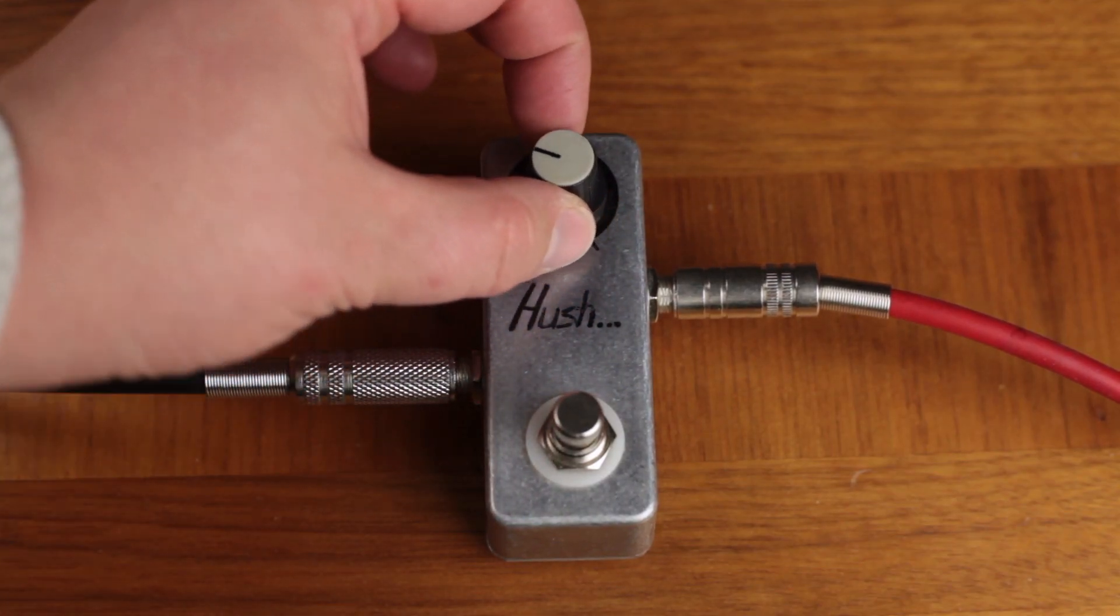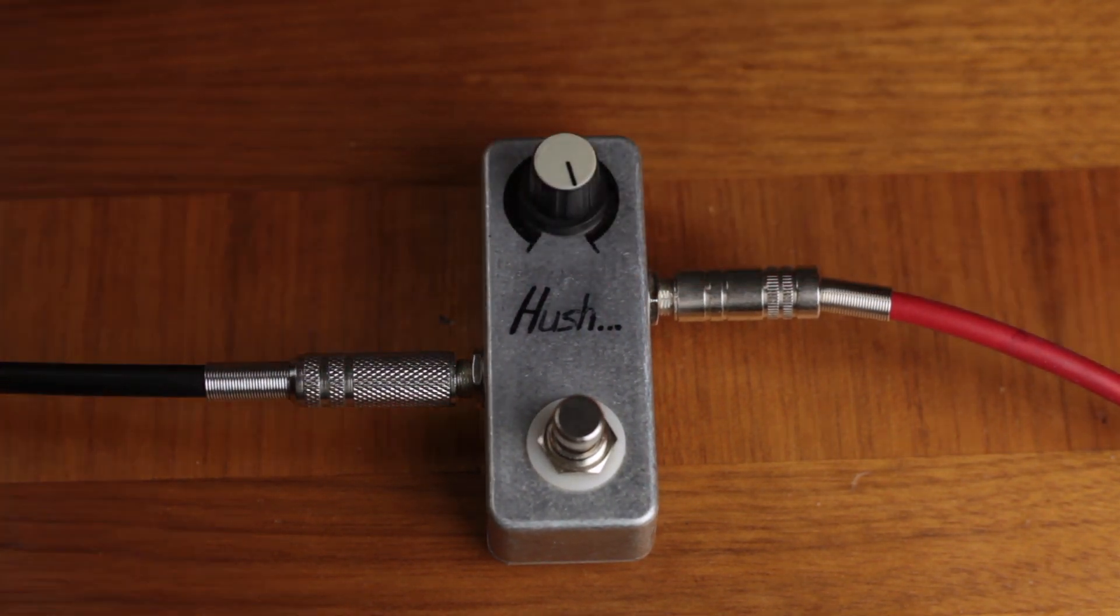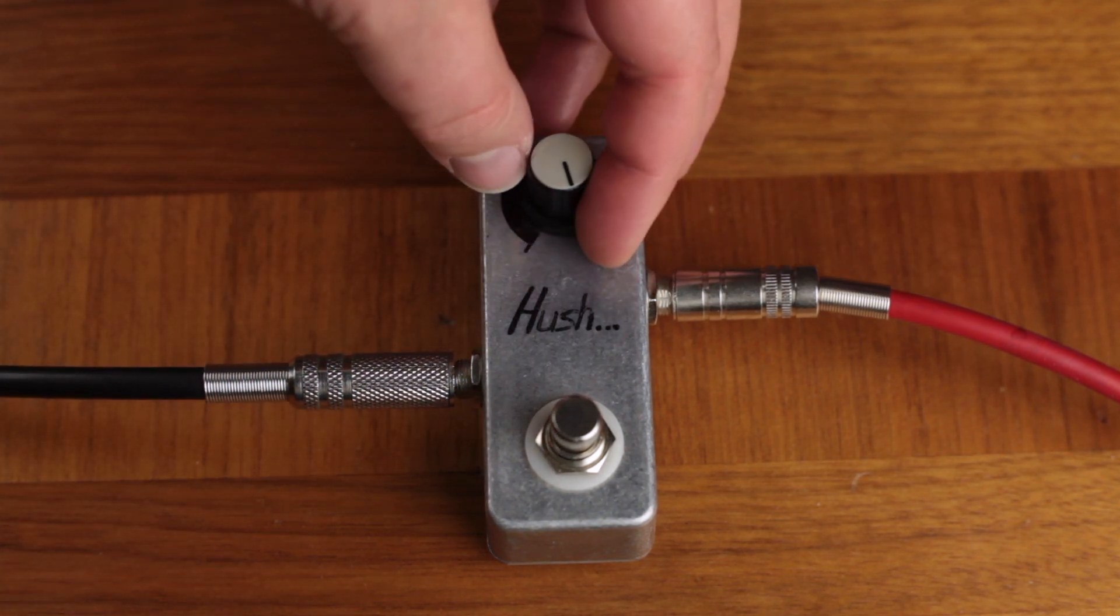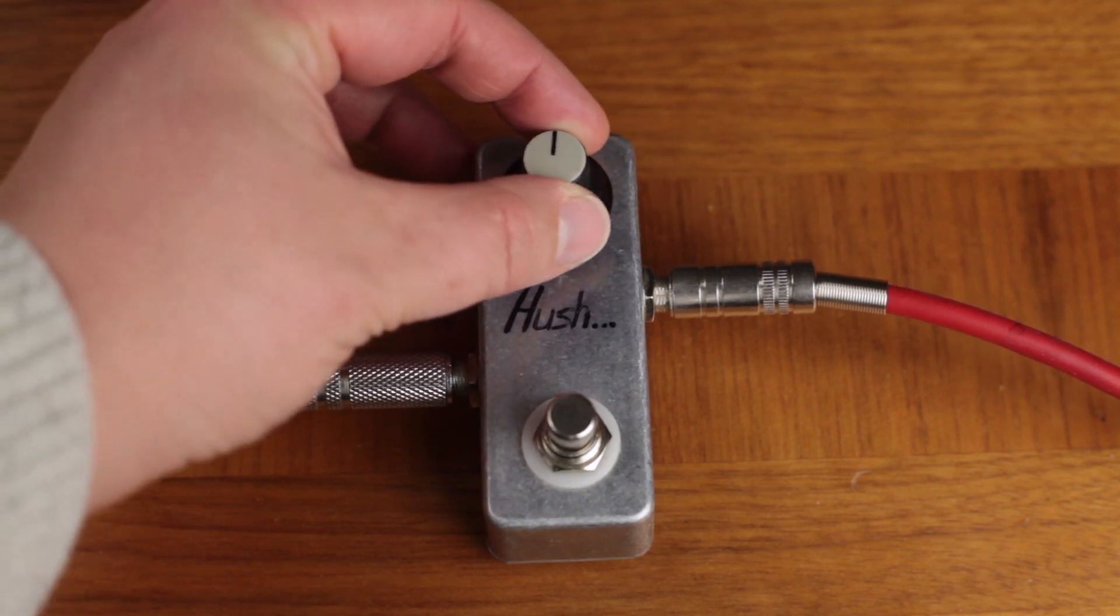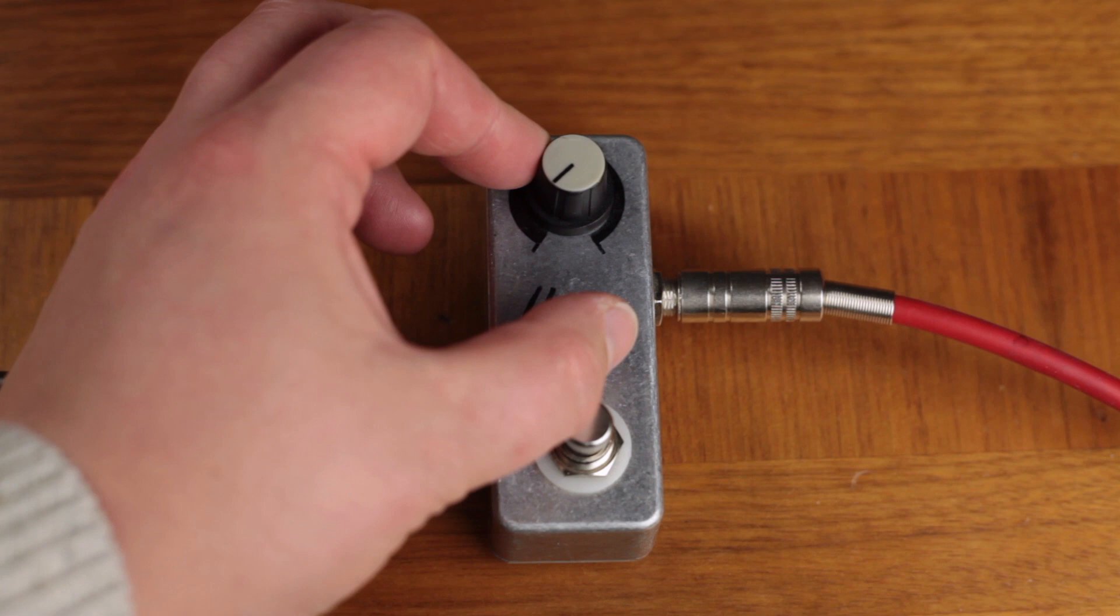If the knob is turned all the way clockwise the output volume is practically speaking equal to our input volume. Rotated anti-clockwise it gets lower and lower until it is off because the output is now grounded.